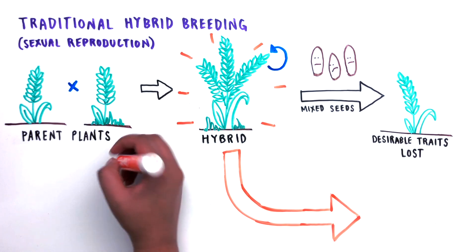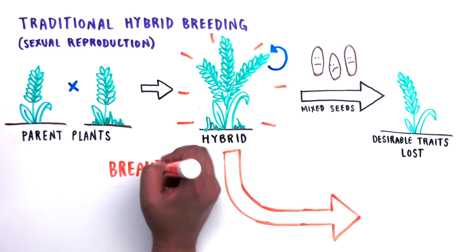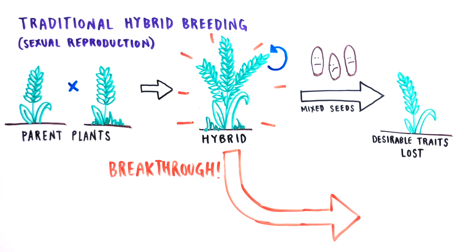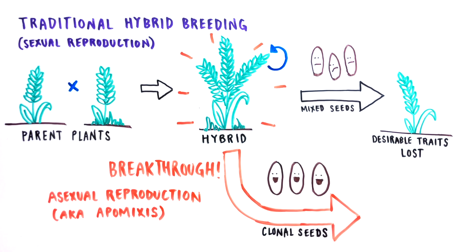In this breakthrough study, Dr. Sundar-san and his team have managed to engineer rice plants that create seeds that are exact clones of the parent. The engineered plants reproduce asexually, yielding clonal seeds with all of the parent's desirable traits.